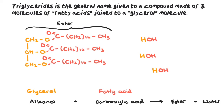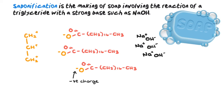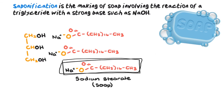So what is saponification? Well, it's the making of soap, involving the reaction of a triglyceride with a strong base such as sodium hydroxide. The triglyceride, which is your ester, ionizes in the presence of sodium hydroxide and high heat. Take a look. Stearate ions take electrons in the bond, giving them a negative charge, and the alcohol takes on a positive charge. The sodium ions bond to the stearate ions and the alcohol bonds to the hydroxides. The actual soap molecule is this one — sodium stearate.